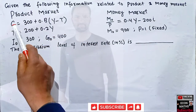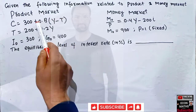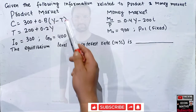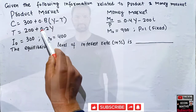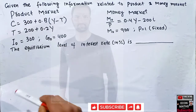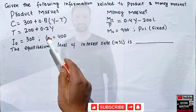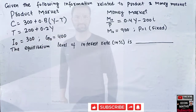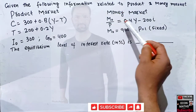In the product market, the consumption function is C = 300 + 0.8(Y - T), where 0.8 is the marginal propensity to consume, Y is income, and T is tax. T = 200 + 0.2Y, where 0.2 is the marginal tax rate. Autonomous investment is 300 and government expenditure, also autonomous, is 400.